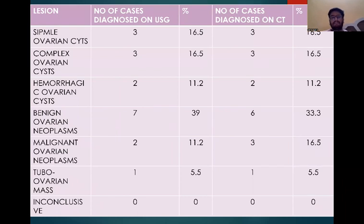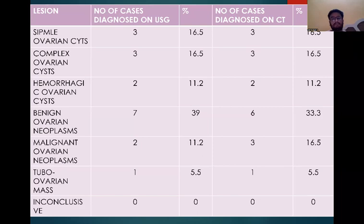For ovarian masses: simple ovarian cysts detected in equal numbers on CT and USG. Complex ovarian cysts — 3 on USG and 3 on CT. Hemorrhagic cysts — 2 on USG and 2 on CT. Ovarian neoplasm — 7 detected on ultrasonography whereas 6 on CT. Malignant ovarian neoplasm — 2 on USG whereas 3 on CT. Teratoma/ovarian mass — 1 on both. Inconclusive: zero on both.